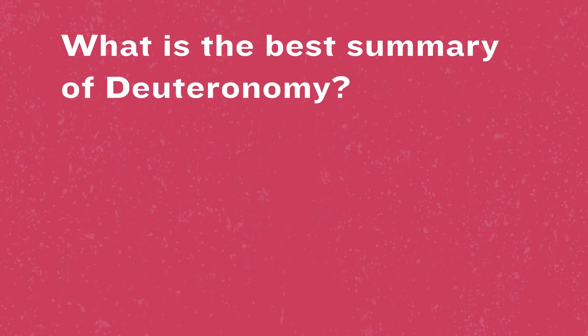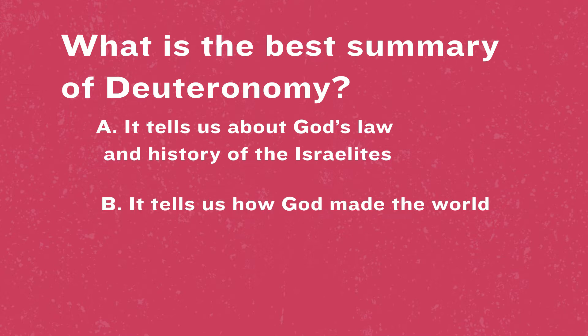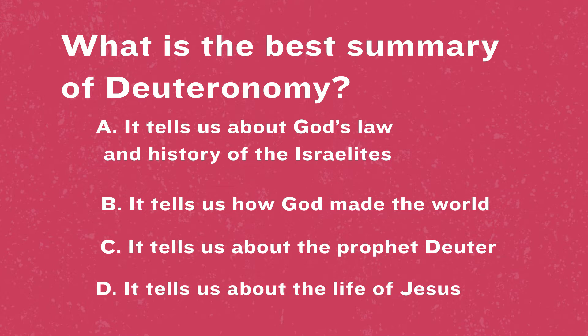Last question. What is the best summary of Deuteronomy? A. It tells us about God's law and history of the Israelites. B. It tells us how God made the world. C. It tells us about the prophet Deuteronomy. Or D. It tells us about the life of Jesus. The answer is A — it tells us about God's law and history of the Israelites. How'd you do? Did you get most of the questions right?